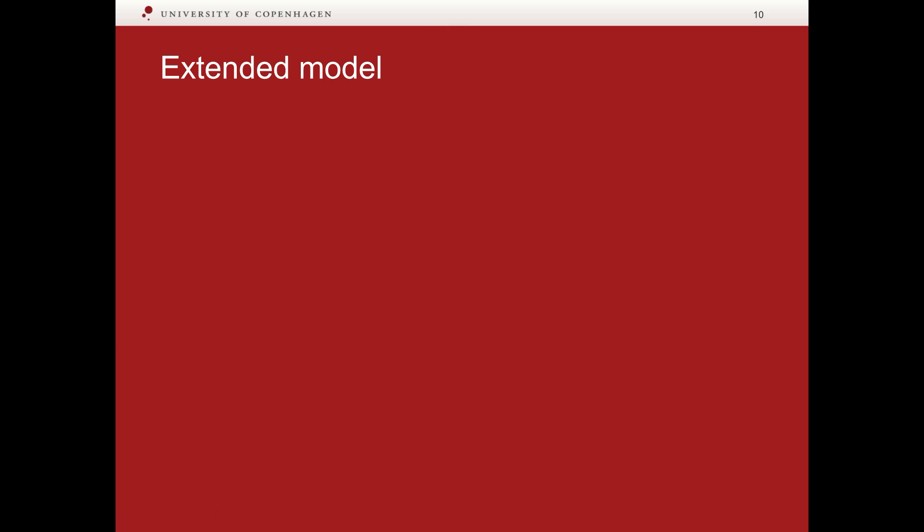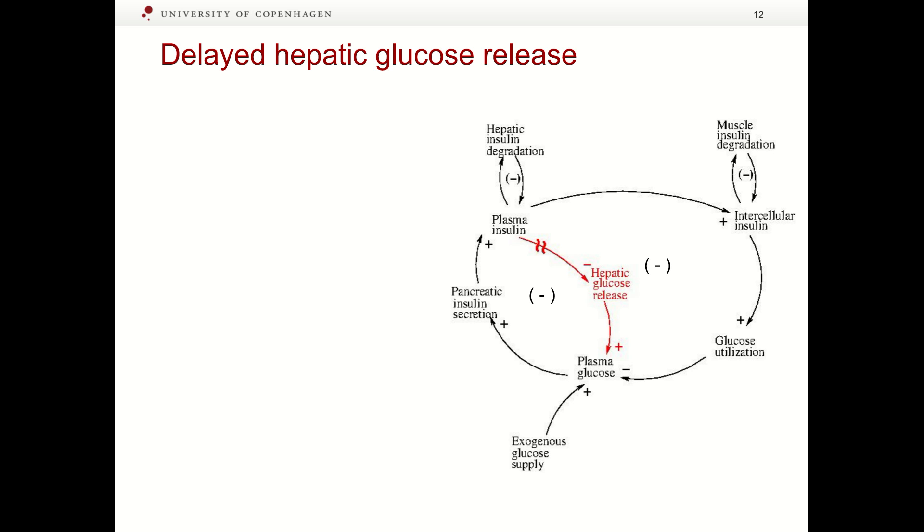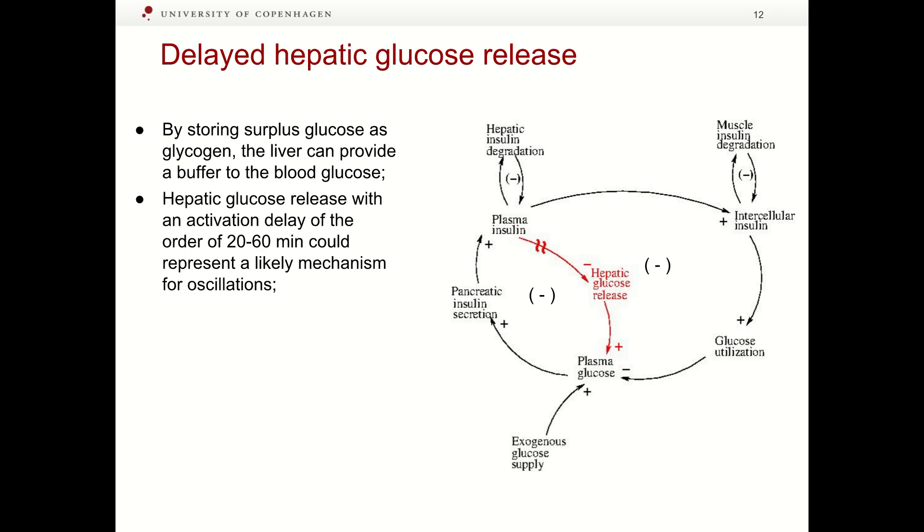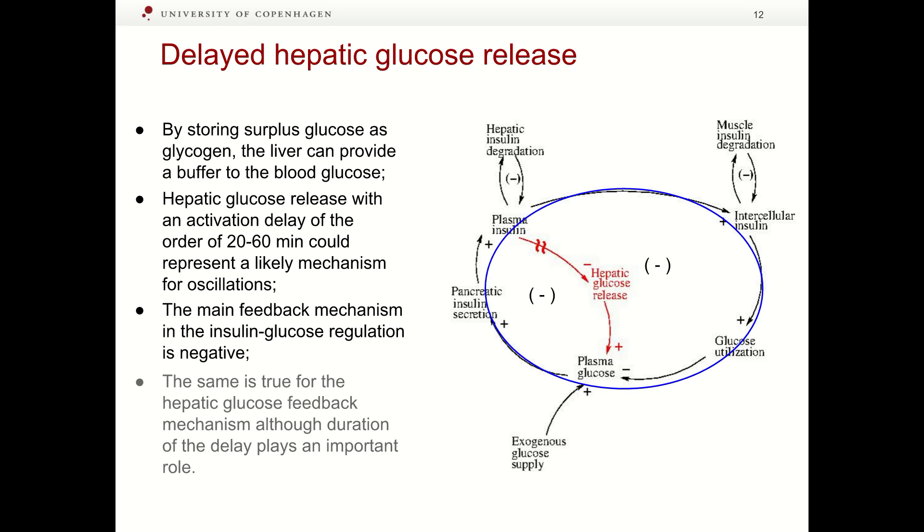Let us see how to construct extended model. Extended model includes additional relation marked in red in this figure. By storing surplus glucose as glycogen, the liver serves as a temporal buffer for the blood glucose. Hepatic glucose release with an activation delay of the order of 20-60 minutes could represent a likely mechanism for oscillations. The main feedback mechanism in insulin glucose regulation is negative. The same is true for hepatic glucose feedback mechanism, although duration of the delay plays an important role.